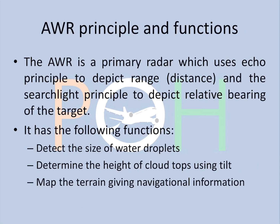The functions are as follows: it detects the size of water droplets, determines the height of the cloud top using tilt, and maps the terrain which gives navigational information. However, nowadays they don't use it for navigation much because you have a terrain database separately installed on commercial jets, but still it has the option and you can still use it for mapping terrain.